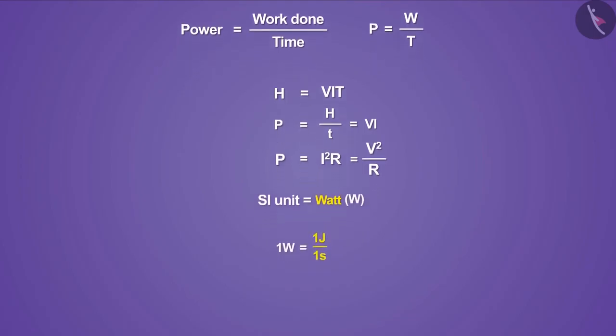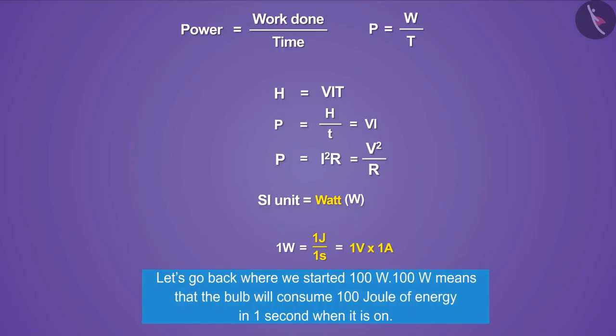Let's go back where we started. 100 watt means that the bulb will consume 100 joules of energy in one second. Let's take another example. Your homes must have electricity meters.